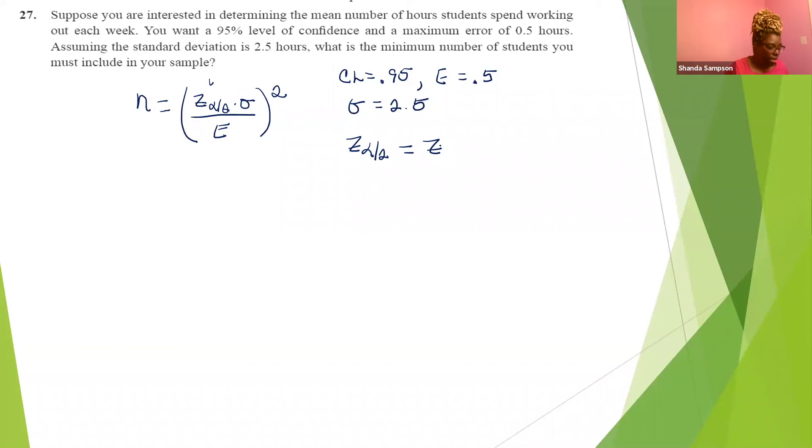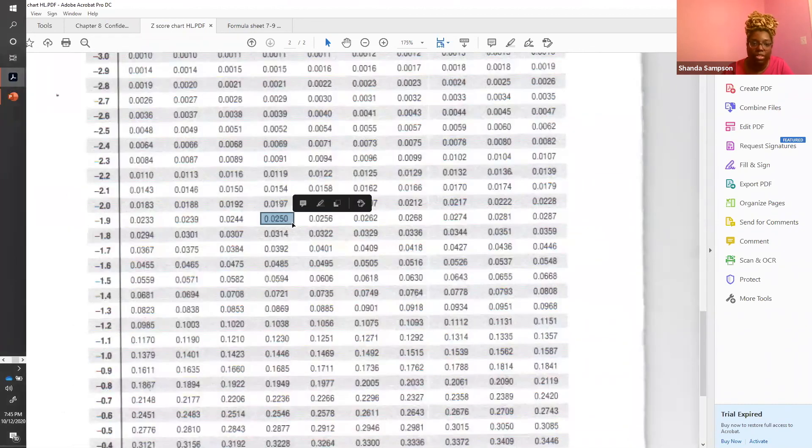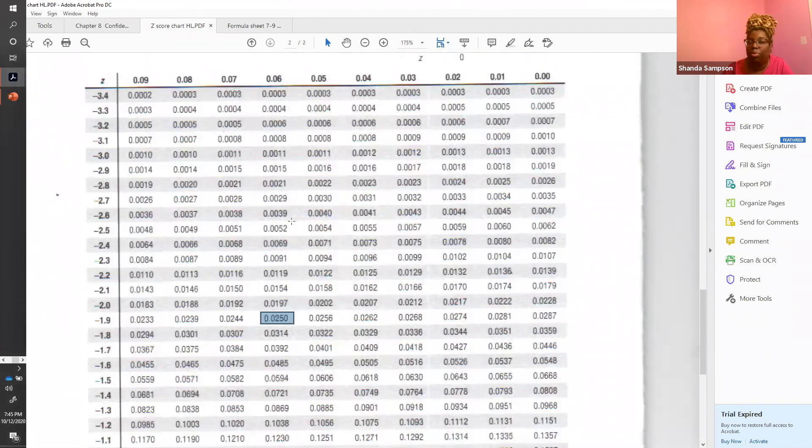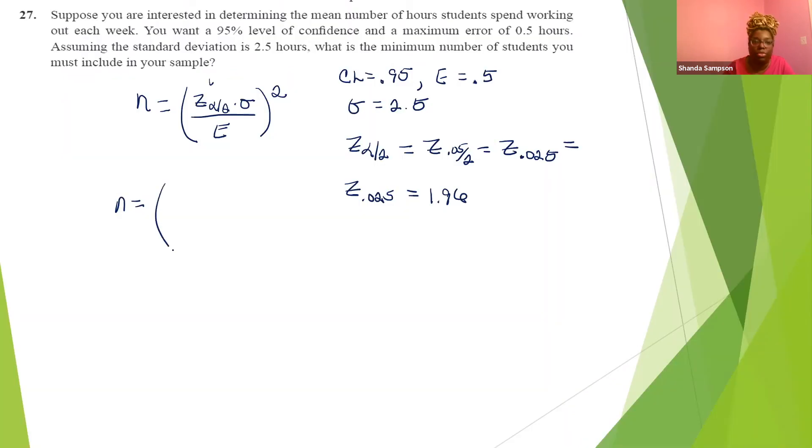n is equal to z alpha over two times sigma all over e squared. Confidence level is 95% or 0.95. Your maximum error, which is e, is equal to 0.5 hours and your standard deviation is 2.5. Alpha is 1 minus 0.95 and that's going to be 0.05. So z 0.05 over 2. So you're looking for alpha of 0.025. 0.025 is positive 1.96. Z alpha over two, which is 1.96, that's times sigma, which is 2.5 all over e, which is 0.5 squared.